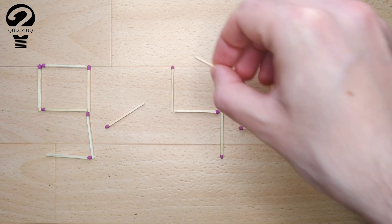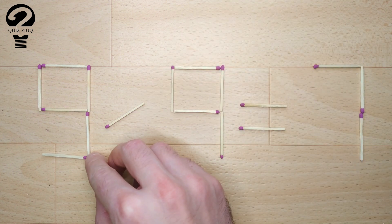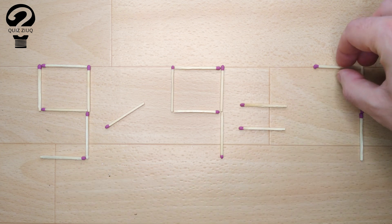And now, when we check the condition, 9 divided by 9 equals 1. 1 equals 1. Our equation is correct.